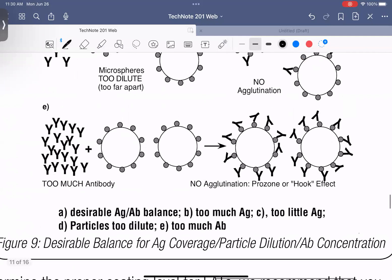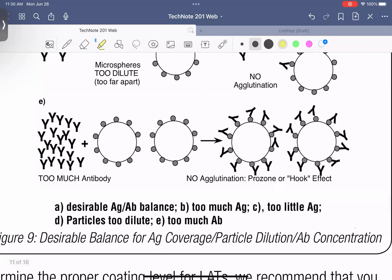And then this one here is the one that is called the hook effect. Just in my experience, it's the most typical one you can run into because you can have a really properly optimized solution regarding the antibody to antigen ratios expected. But then if you have a sample with just so much of that target analyte in there, it is going to completely oversaturate and this also will create no signal.